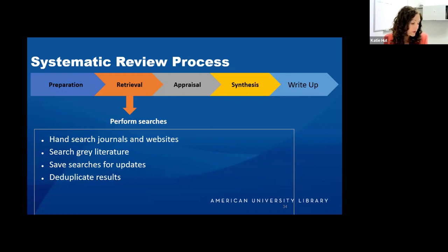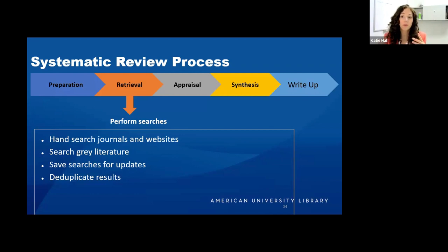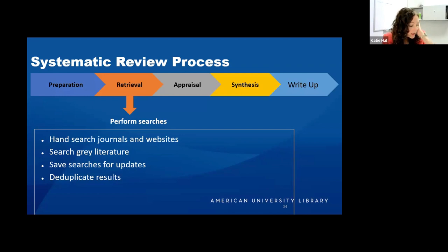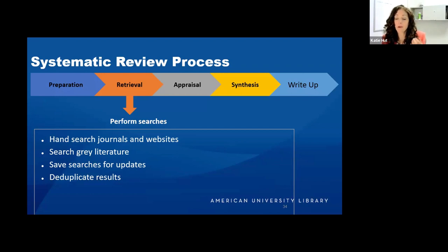Gray literature is literature published outside of commercial publishing — conference proceedings, government documents, theses, and dissertations. This is an important step because you want to make sure your results aren't biased away from null findings. Null findings may not be published but are still part of the body of research that needs to be included in a systematic review. Additionally, something like 50% of conference proceedings are never published, so there's a lot of information there.